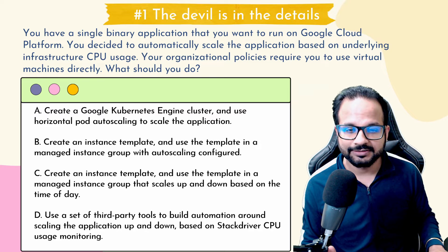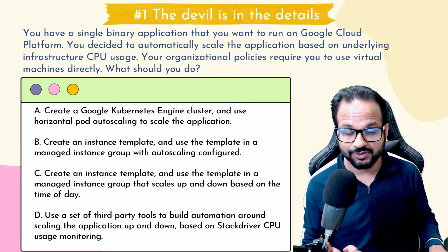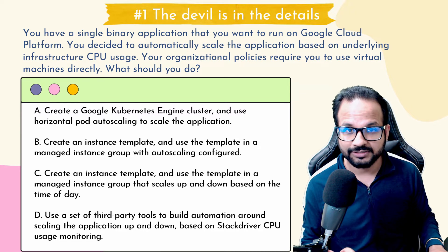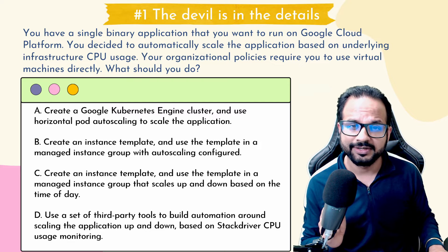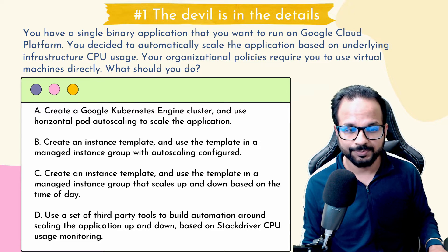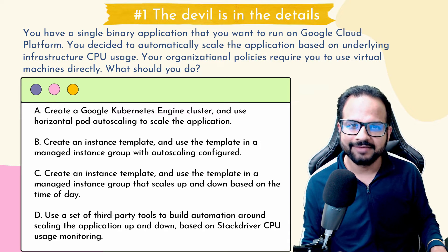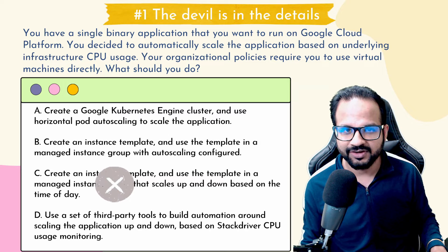The second option is to create an instance template and use that template in a managed instance group with auto scaling configured. This option looks more promising because it uses virtual machines behind an instance template and you can configure auto scaling. It doesn't explicitly state that auto scaling is based on CPU usage, but let's look at the other options. The third option says create an instance template and use the template in a managed instance group that scales up and down based on the time of day — that's schedule-based auto scaling, which is not the requirement here. So option three cannot be the ideal choice.